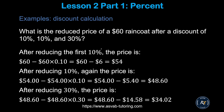Next, we'll learn successive reduction. For example: what is the reduced price of a $60 raincoat after successive discounts of 10 percent, 10 percent, and 30 percent? Imagine you went to Macy's with three coupons — let's see how they apply.